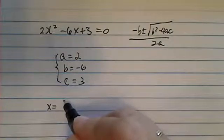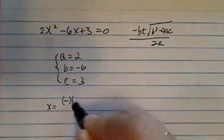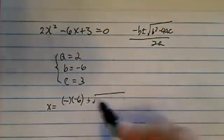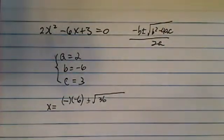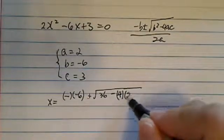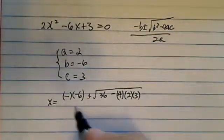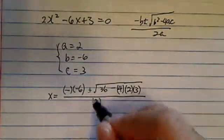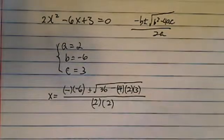x equals minus b, so minus negative 6, which is positive 6, plus or minus the square root of b squared is 36, because negative 6 squared, minus 4ac. I tell my students just write it down: minus 4 times 2 times 3. It won't take you too much longer, but you increase your chance of getting this correct much better.